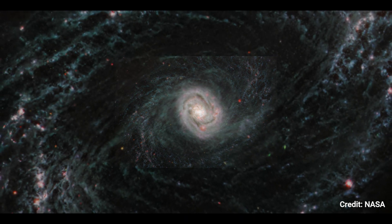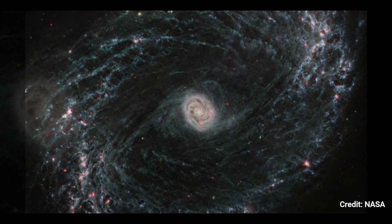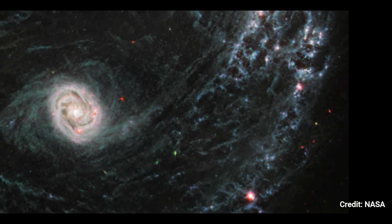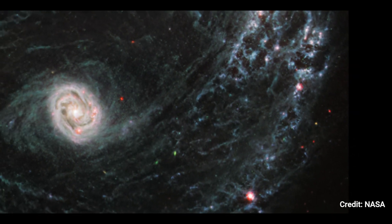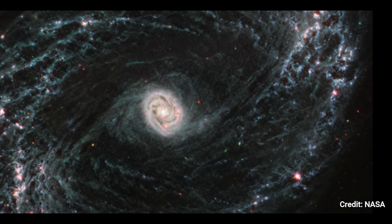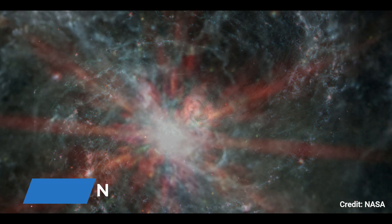NGC 1433 is a Seyfert galaxy, which is normally close to Earth and includes a supermassive black hole at its center that consumes material at a rapid rate. The brightness and lack of dust in NGC 1433's MIRI image could indicate a recent collision with another galaxy.